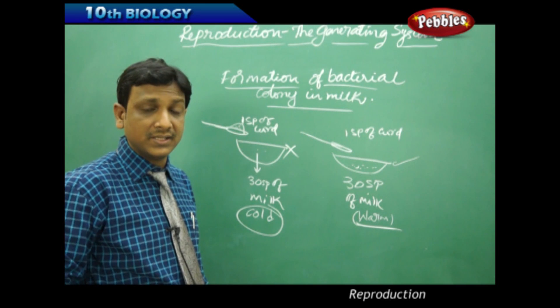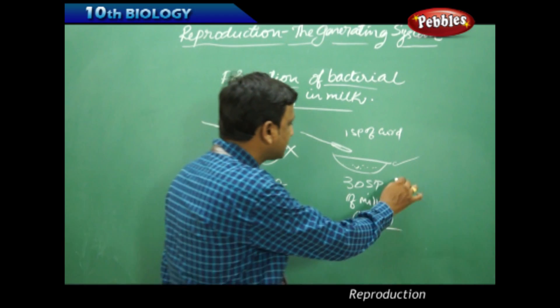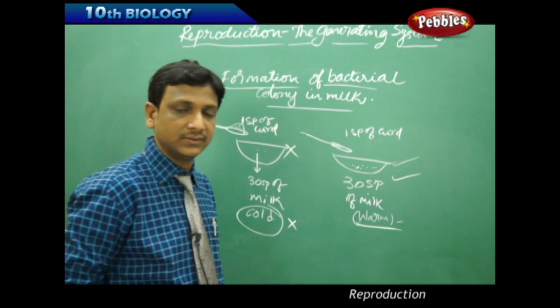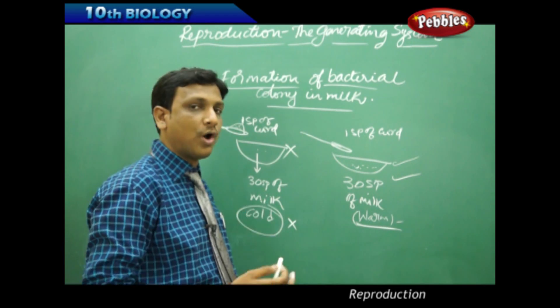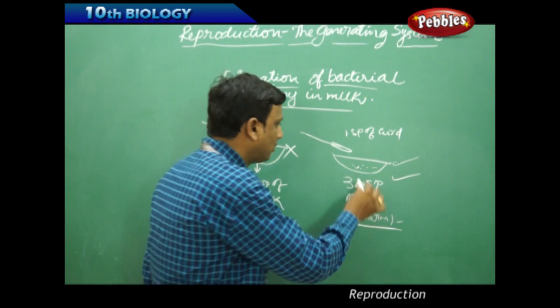They could not reproduce as the temperature is not favorable, whereas in this case the temperature is favorable. It is warm, having the optimum temperature for the growth of bacteria, so the milk is turned to curd.